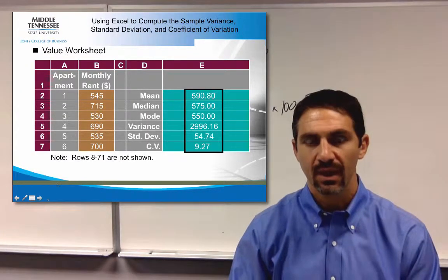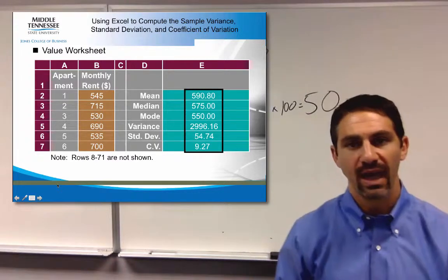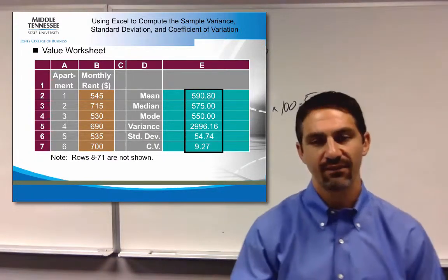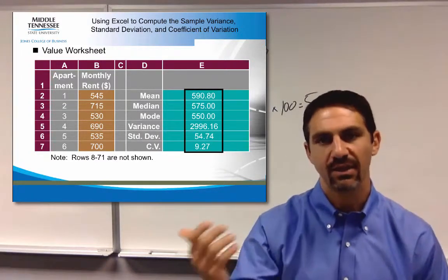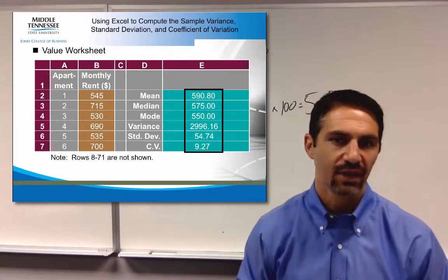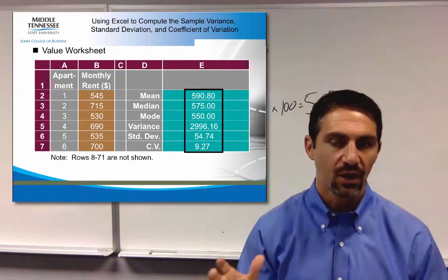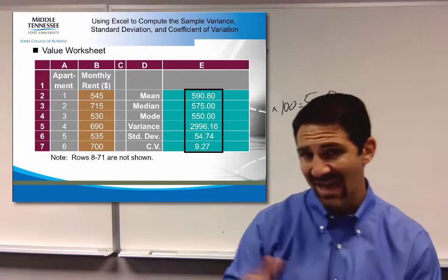Hopefully you can get the same answers as what you saw in our set here. And what you should see is 590.8, 575, 550, variance and the standard deviation, and then also your coefficient of variation. So those are extremely important as we get going.